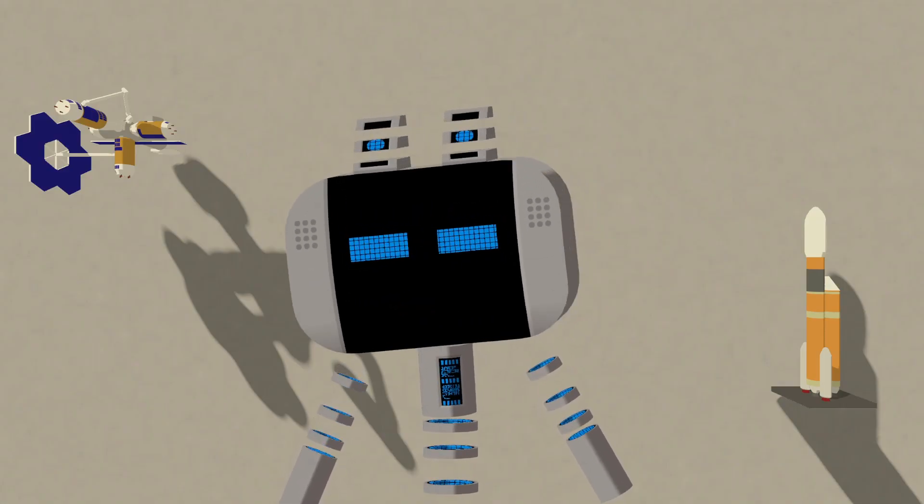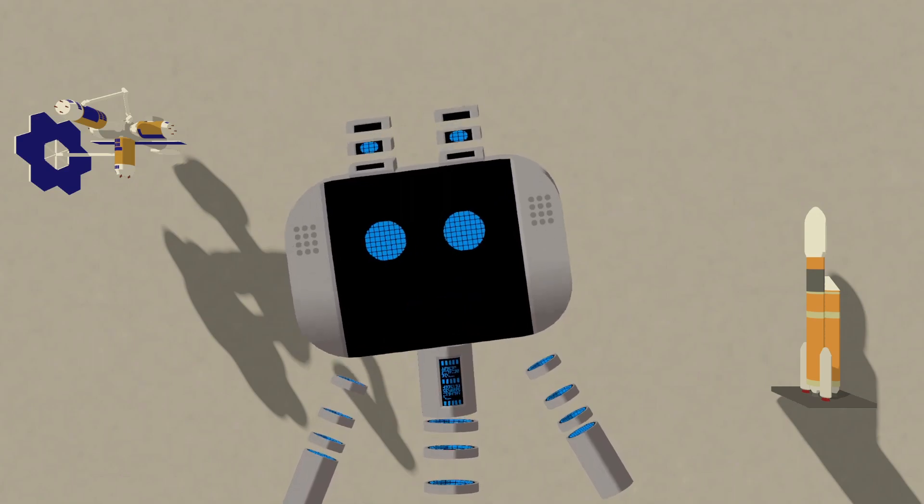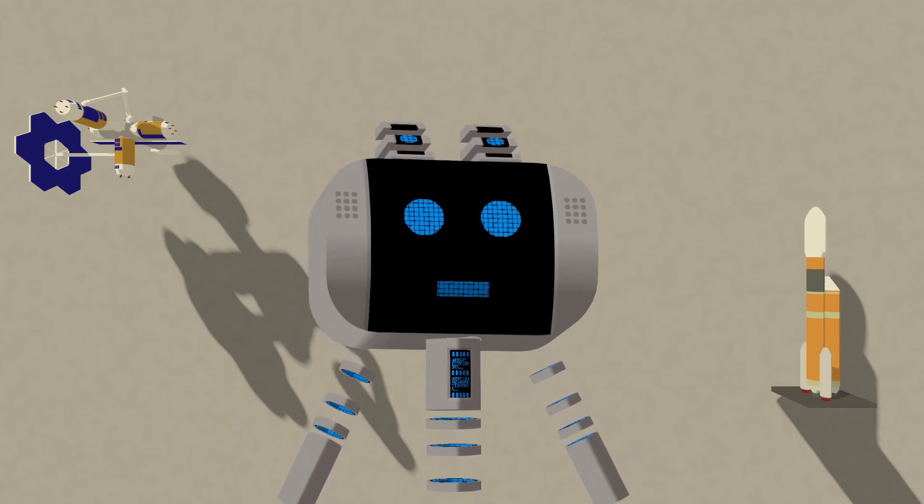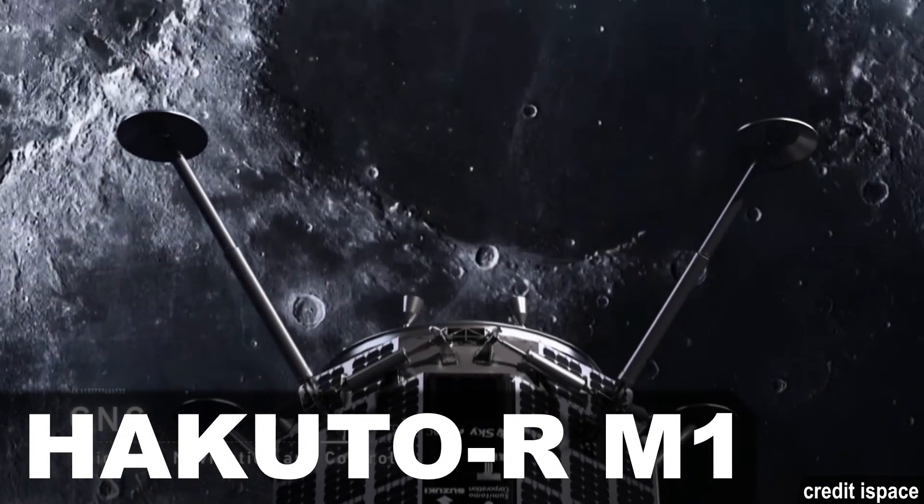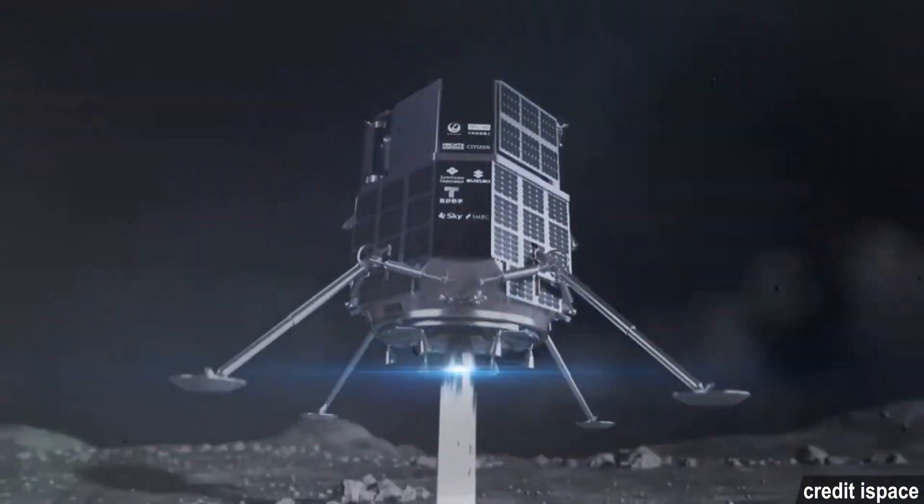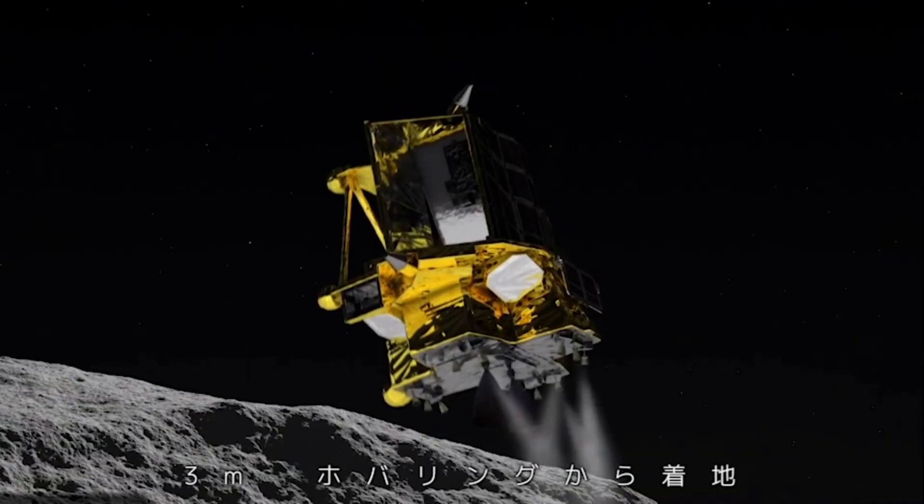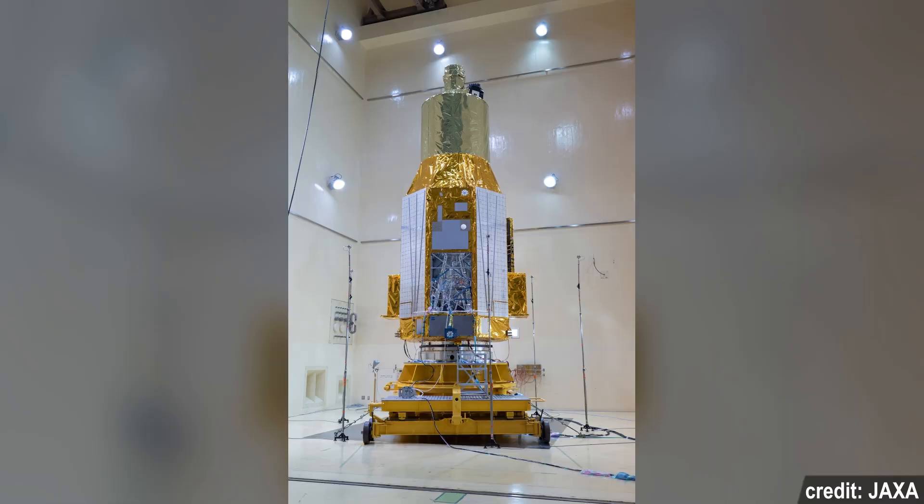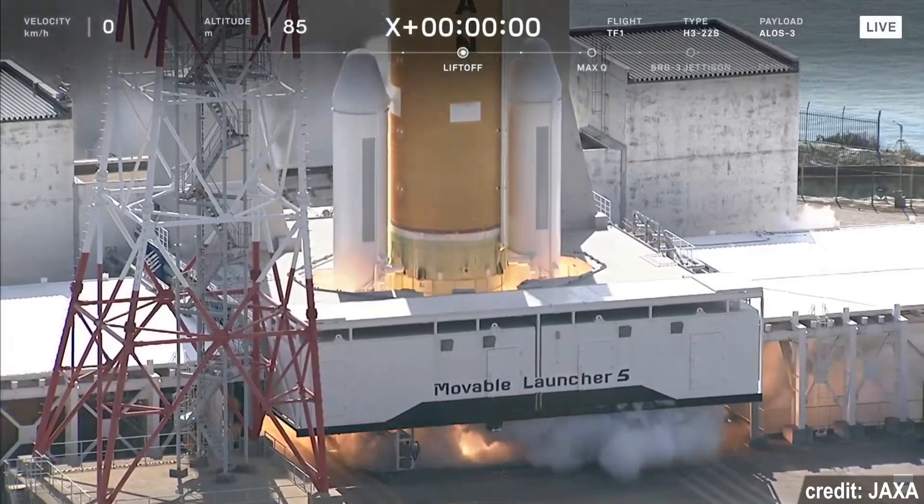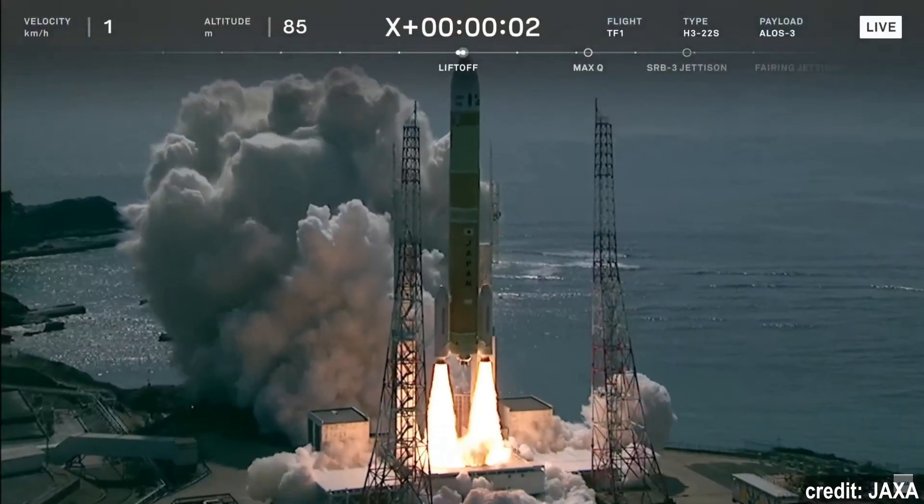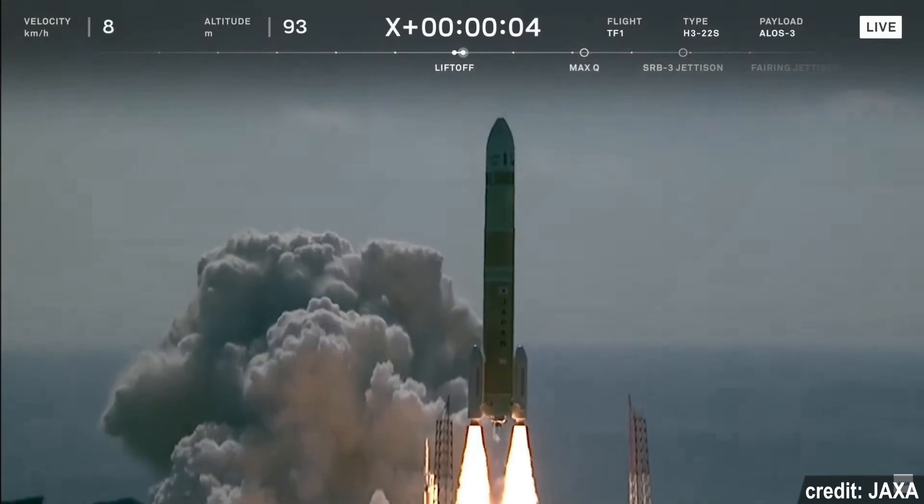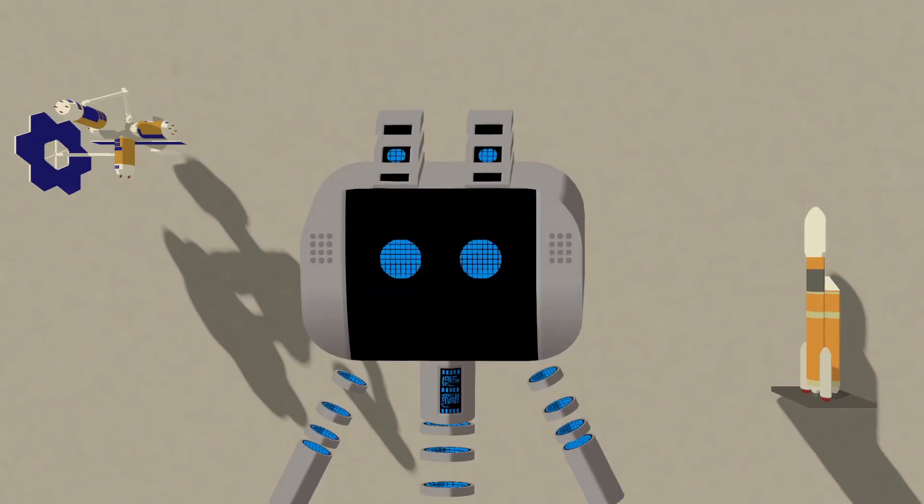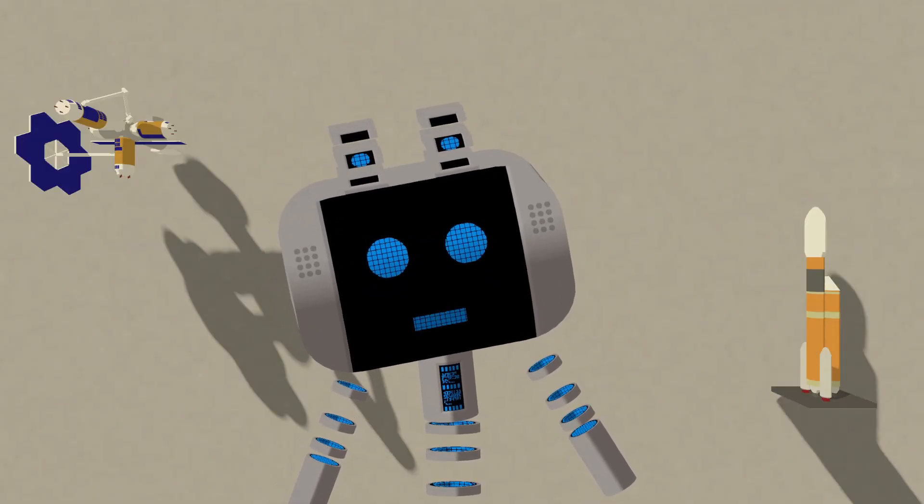OMOTENASHI may not have landed on the moon, but Japan will have two more shots to become the fourth nation to land on the moon before the summer. iSpace's Hakuto-R Lander is currently in orbit around the moon and will be landing at the end of April. JAXA's Slim Lunar Lander will be launched on the next H-2A rocket, together with the XRISM X-ray Telescope. The recent failure of the H-3 test flight may delay launch a little bit, but you can expect it anywhere between April and June. But no matter what happens, I'm hyped.